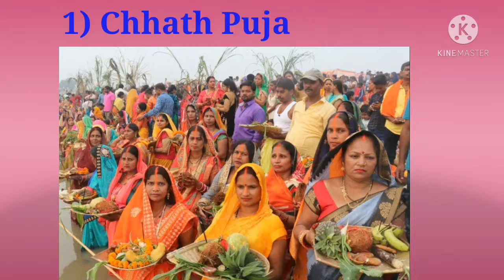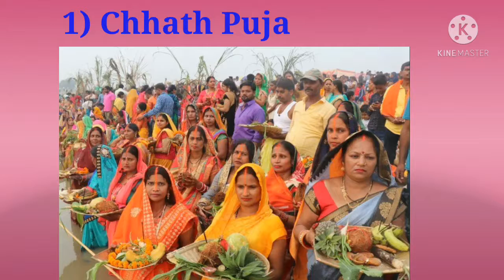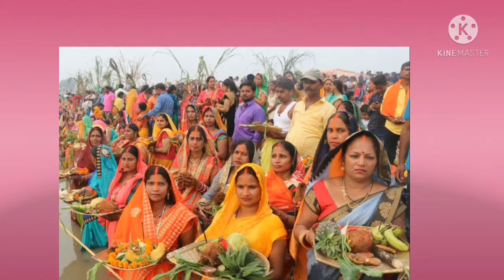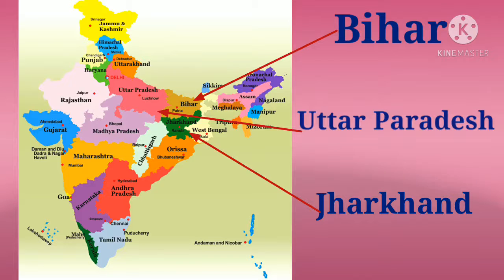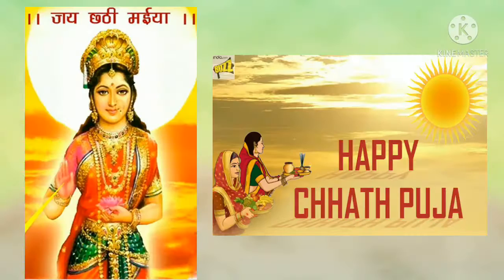1. Chhat Puja. Chhat Puja is also known as Surya Shashti and is celebrated on Kartik Shukla Shashti. This festival is celebrated after 6 days of Diwali and is mainly celebrated in the states of Uttar Pradesh, Bihar and Jharkhand with great devotion. On Chhat Puja, worshipping the Sun God helps you gain health, wealth and happiness.